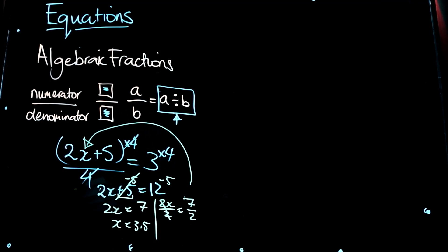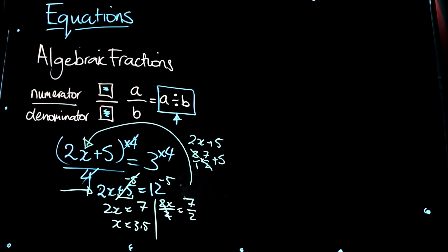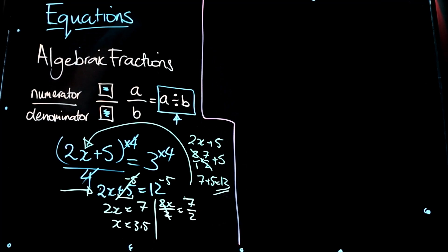To verify: substitute x = 7/2 back into the expression 2x + 5. Two over one times 7 over 2 — those twos cancel on the diagonal — leaving 7 plus 5, which equals 12. That confirms the answer. With algebraic fractions, leave answers as improper fractions rather than decimals because it makes it much easier to check your work.